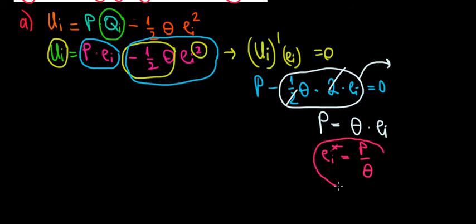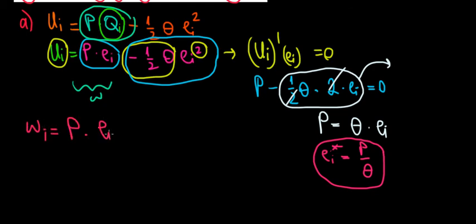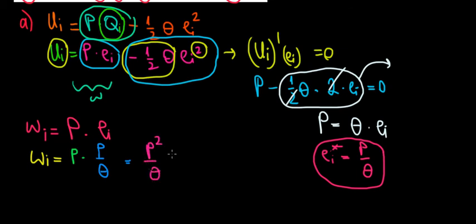Now we need the income. The wage equals the value of production, which is price times the effort level. Substituting e* = P over theta, the wage equals P times P over theta, which gives P squared divided by theta. So the income of each worker is w = P² / θ.